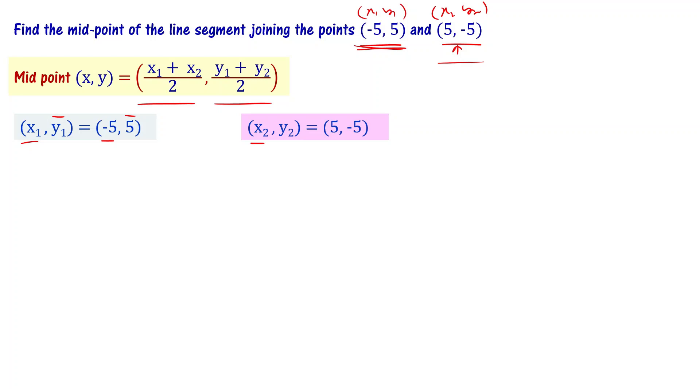Let us substitute these values into this equation. Then the midpoint (x,y) can be written as (-5 plus 5 divided by 2) and (5 plus -5 divided by 2). This is 0 by 2 and this is also 0 by 2.